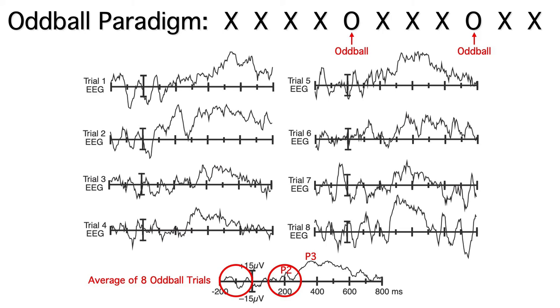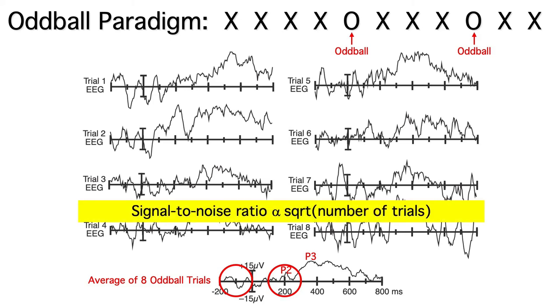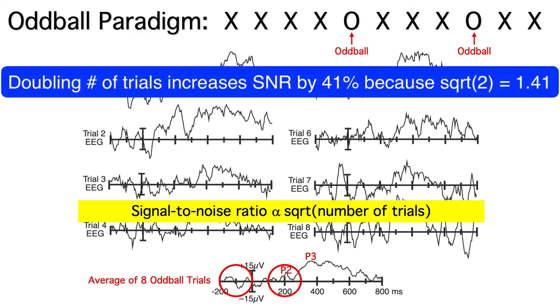Now, if we make some simple assumptions, it turns out that the signal-to-noise ratio will increase in proportion to the square root of the number of trials. So doubling the number of trials from 8 to 16 would only increase the signal-to-noise ratio by 41 percent, because 1.41 is the square root of 2.